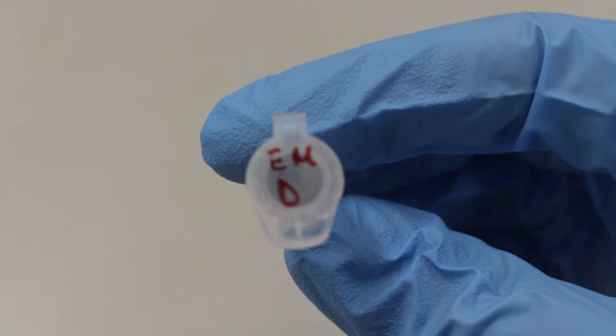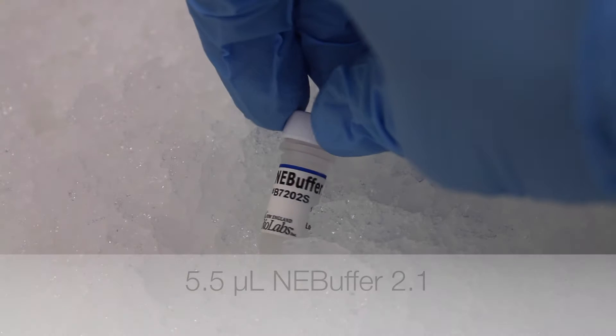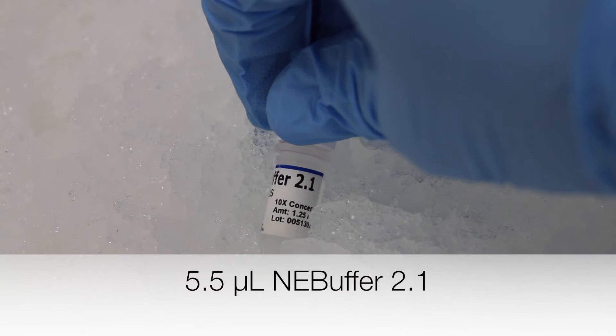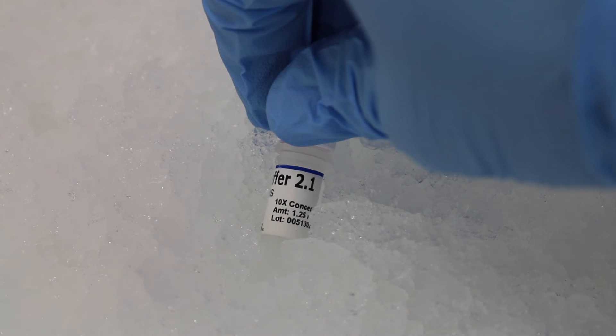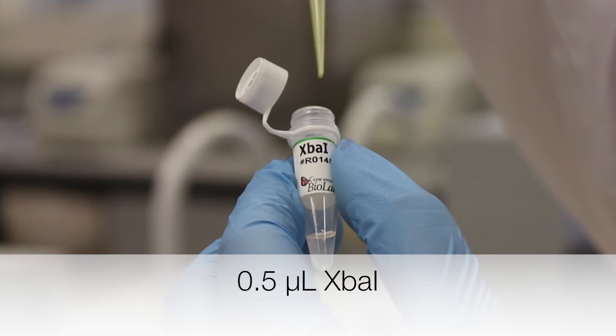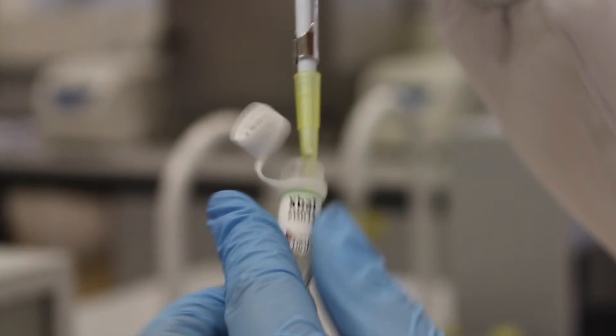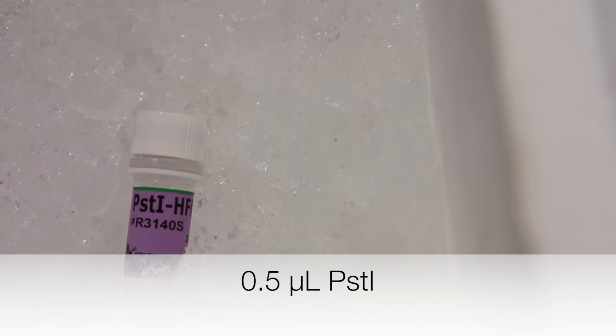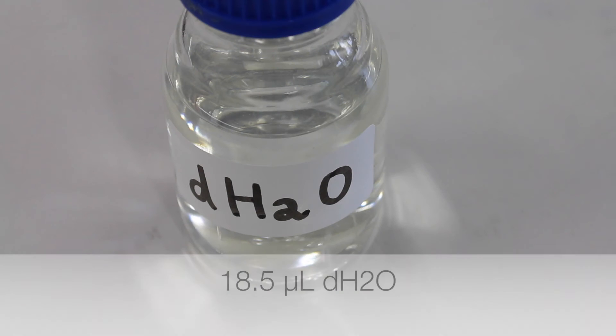The enzyme master mix for the downstream part will contain the following: 5.5 microliters of NEB buffer 2.1, 0.5 microliters of XbaI, 0.5 microliters of PstI, and 18.5 microliters of distilled water.